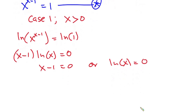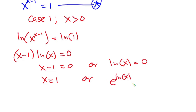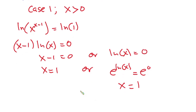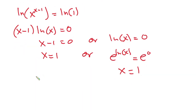Let's simplify: x minus 1 equals zero gives x equals 1. Or, raising e to both sides of natural log of x equals zero gives x equals e to the power zero, which is also x equals 1. So either way, from Case 1 we get x equals 1. Now let's move to Case 2, where x is less than zero.